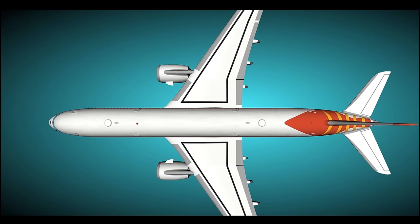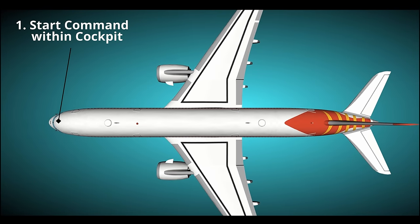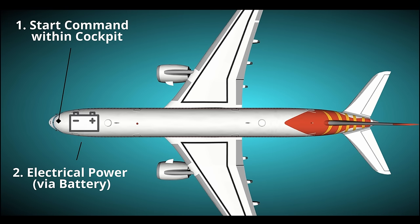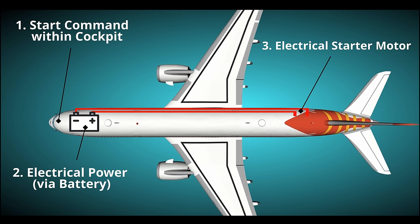First the pilot sends a start-up command to the system. This activates the electrical power supplied by a large on-board battery. This drives an electrical motor, and the motor will turn a shaft on the auxiliary power unit, also known as an APU.